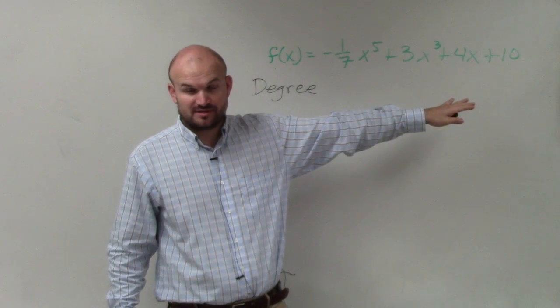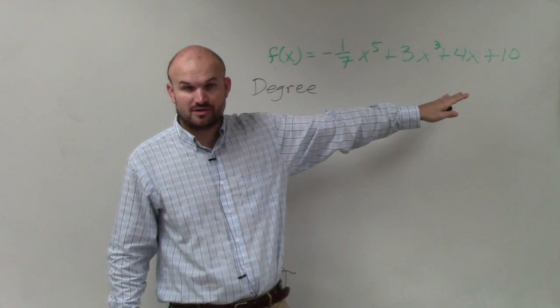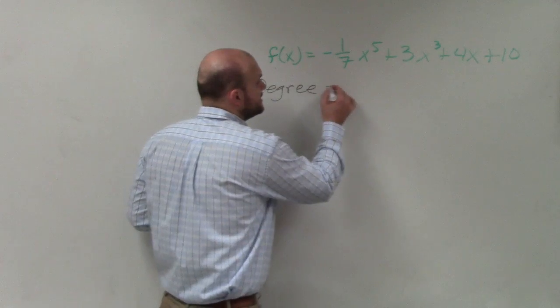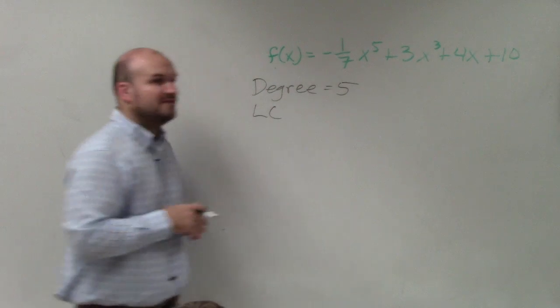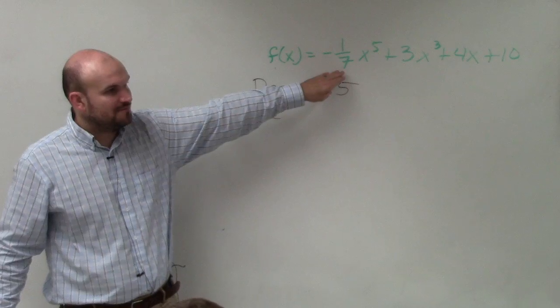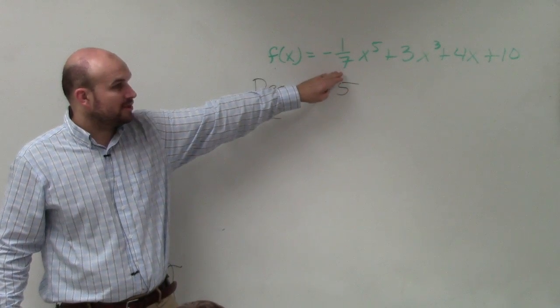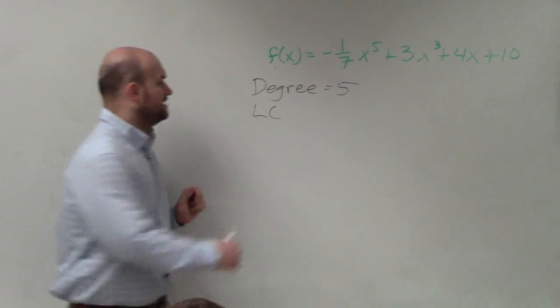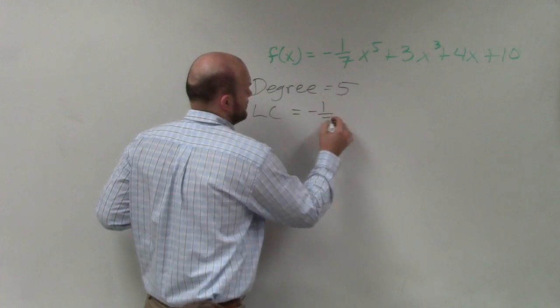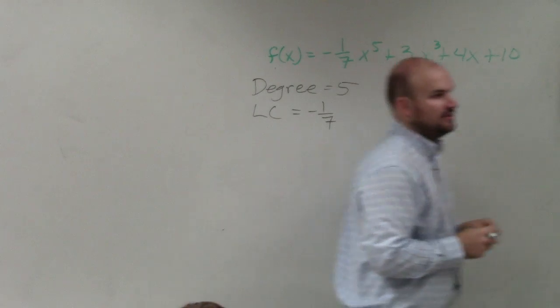I have my lowest power first. Could everybody pay attention here just so we make sure we're on the same page? So my degree in this case is 5. My leading coefficient is the coefficient of my exponent with the highest power, which is negative 1/7. Does everybody follow me with that?